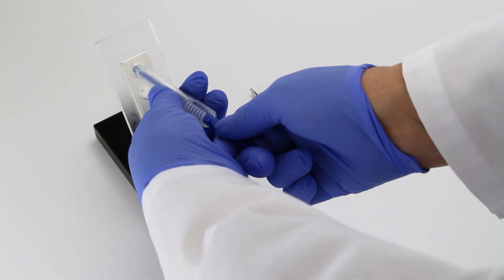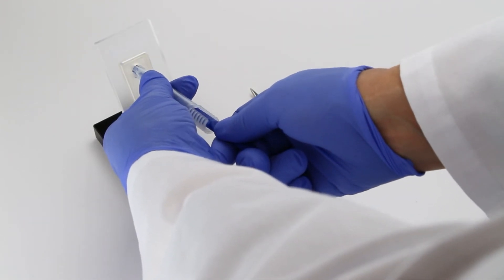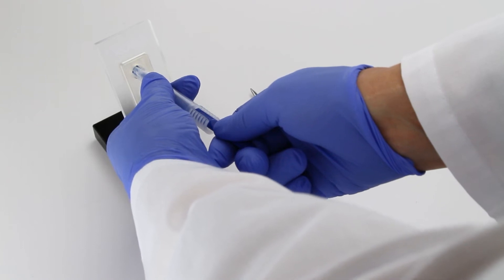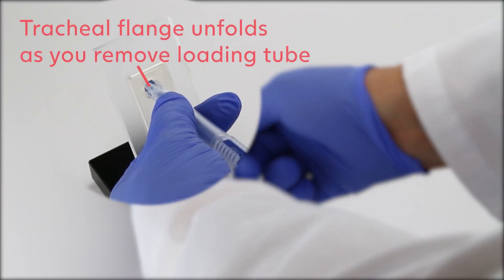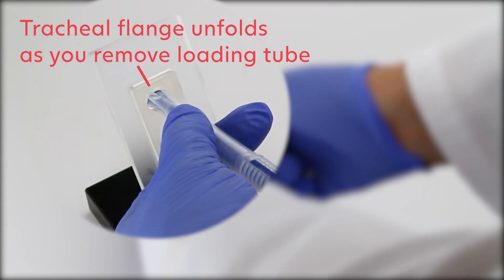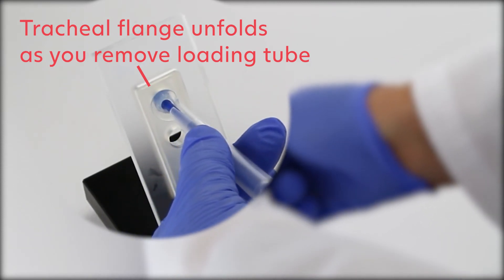Pull back gently on the loading tube and inserter pin until you feel the esophageal flange of the voice prosthesis reach the anterior esophageal wall. You will see the tracheal flange of the voice prosthesis unfold as you remove the clear loading tube.